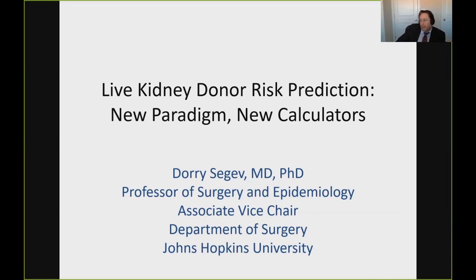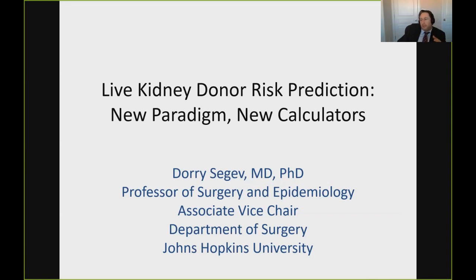Nobody I know would allow a 60-year-old woman with diabetes to donate a kidney. Yet that 60-year-old woman with diabetes has about a 0.5% lifetime risk of getting ESRD if she donates. Everybody I know would allow a healthy 40-year-old black male to donate a kidney. Yet even without diabetes, that black male has a 1% lifetime risk of end-stage kidney disease — twice as high as the white 60-year-old diabetic woman. We allow him to donate and don't allow her, because we view things as single organ systems — never diabetes, never hypertension, never BMI over 35 — rather than putting the entire picture together.